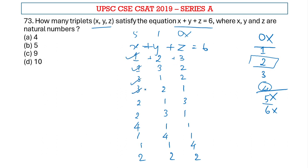So 1, 2, 3, 4, 5, 6, 7, 8, 9, 10. There are totally 10 possibilities. Therefore option D is the right answer.